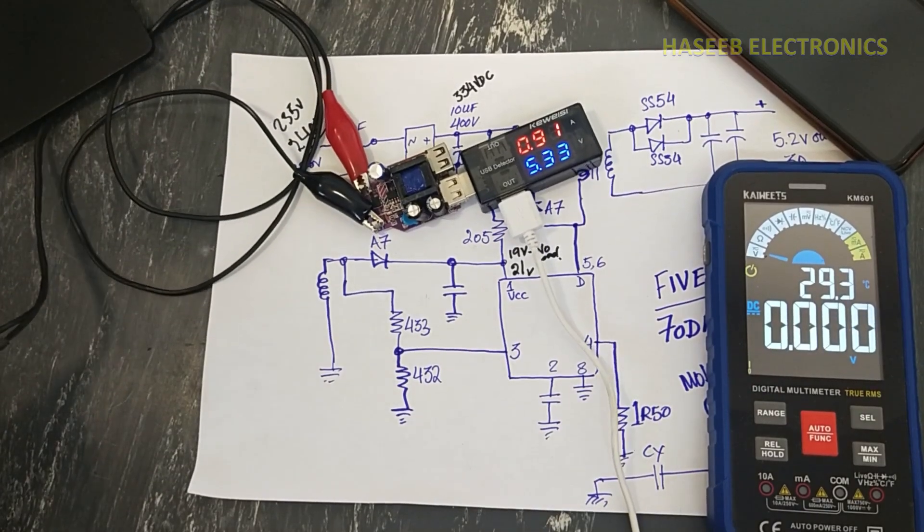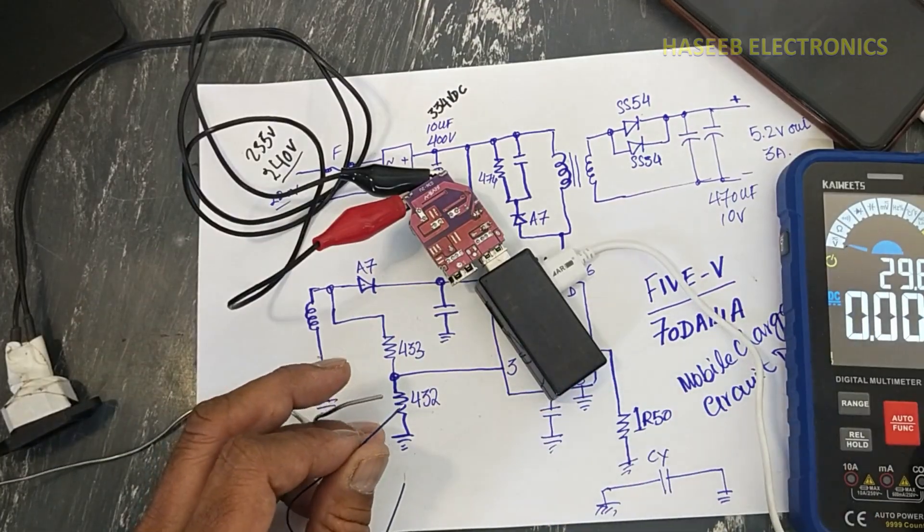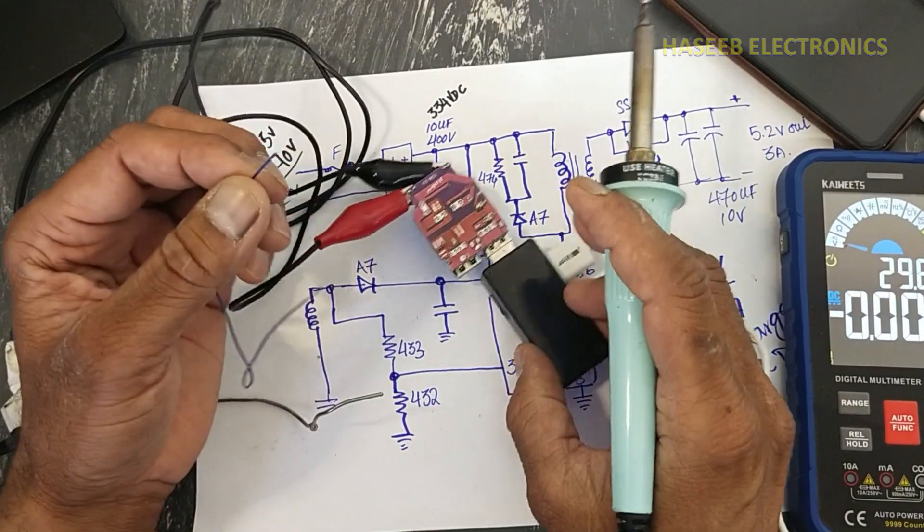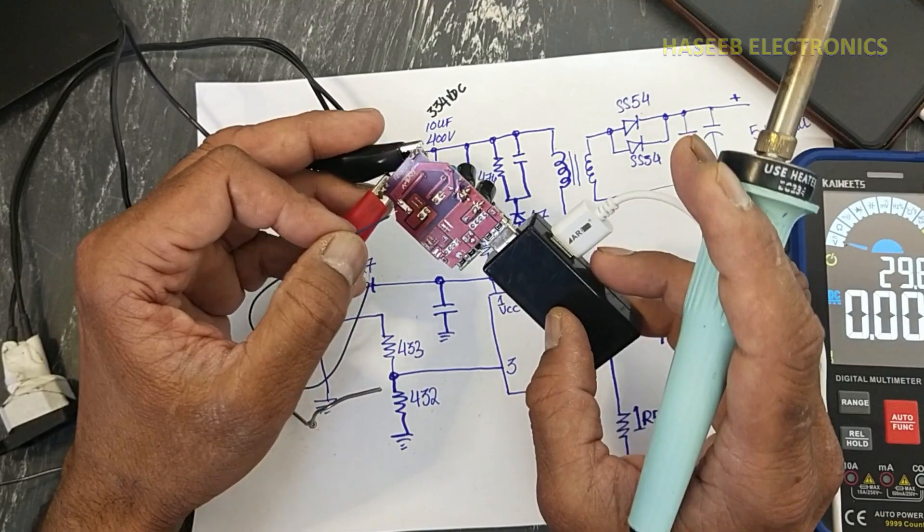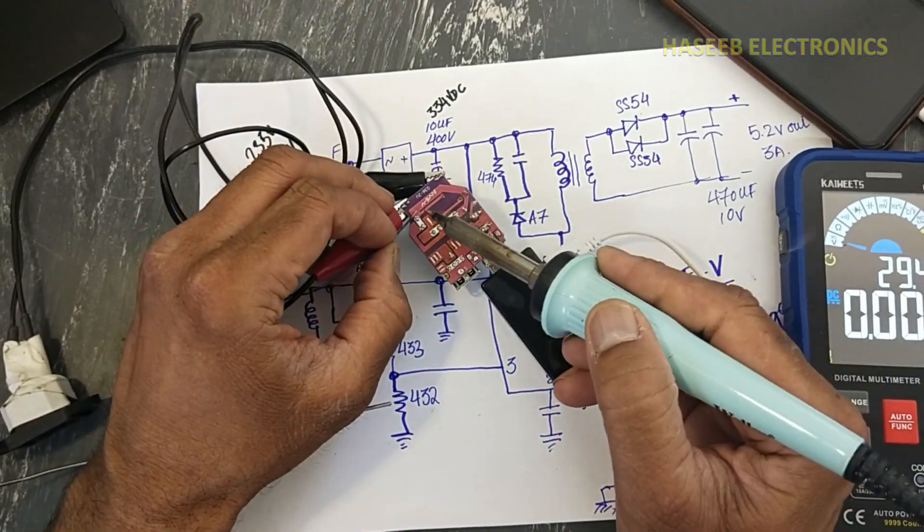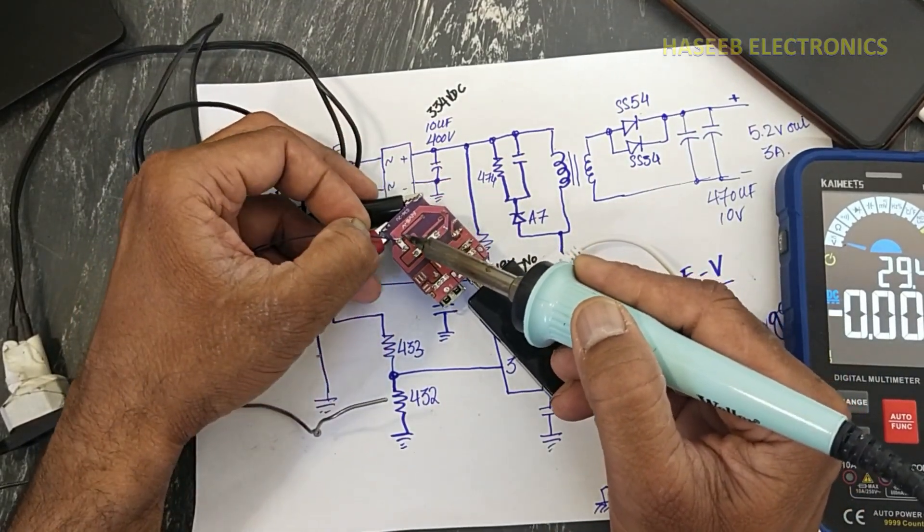Let's check on oscilloscope. I will connect a wire here to connect ground at negative terminal of the capacitor.